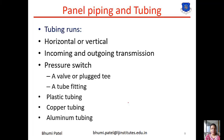The third one is the aluminum tubing. It is commonly used in panel piping and the main disadvantage of aluminum tubing is its vibration. In most control panels, plastic tubing is used. In some main control panels, we can also use copper or aluminum tubing. So these are the different materials used for the tubing system.